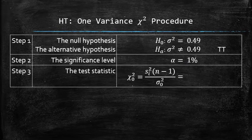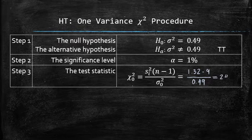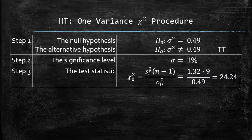The test statistic can be found using the formula. In our case, the test statistic chi-squared 0 equals 24.24. Step 3 is complete.